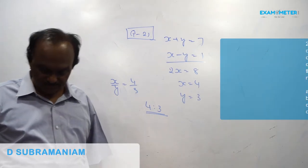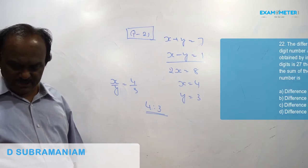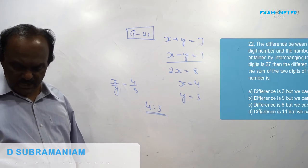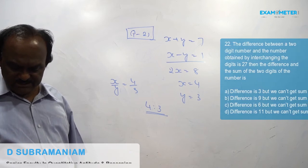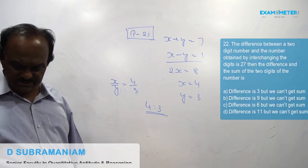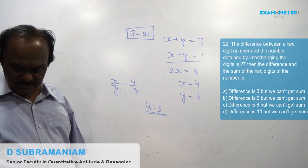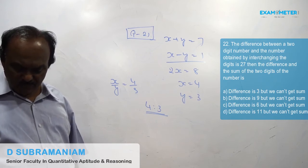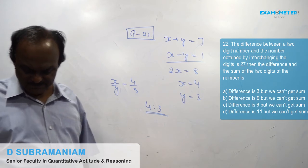22nd question: The difference between a two-digit number and the number obtained by interchanging the digits is 27. Then find the difference and the sum of the two digits of the number.